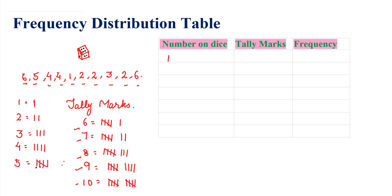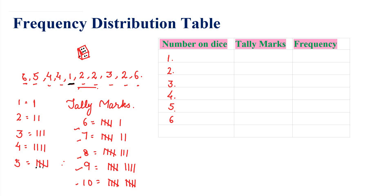Now, a dice has six numbers — 1, 2, 3, 4, 5, 6. Now tell me, how many times did each number appear? We will show this in a frequency distribution table. One appeared 1 time. Two appeared — one, two, three — 3 times. Three appeared 1 time. Four appeared — one, two — 2 times. Five appeared 1 time. Six appeared — one, two — 2 times.